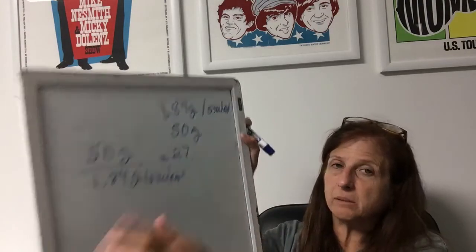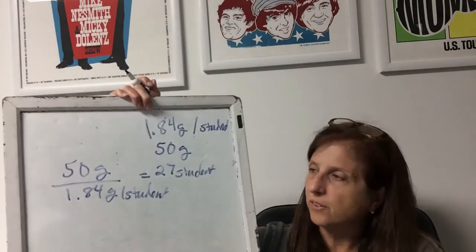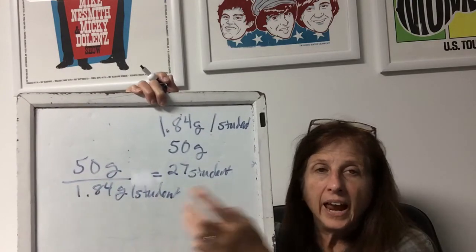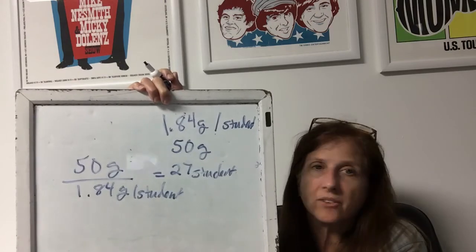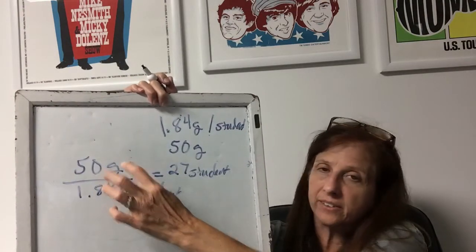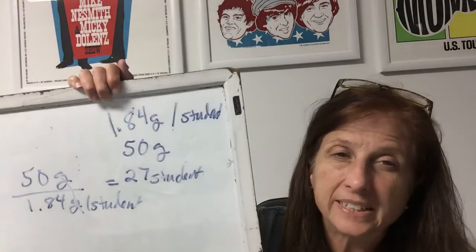Now mathematically, how does this work out to be students? There's a rule I call the Jesus rule of math — because Jesus said the first will be last and the last will be first. This student is in the denominator of the denominator. If something is in the denominator of the denominator, it gets to move up to the numerator. The grams cancel out, and you're left with students in the numerator. If something's in the denominator of the denominator, it gets to move up — it'll save you some steps.